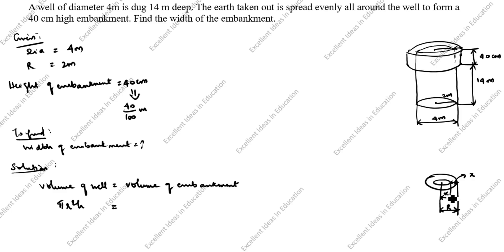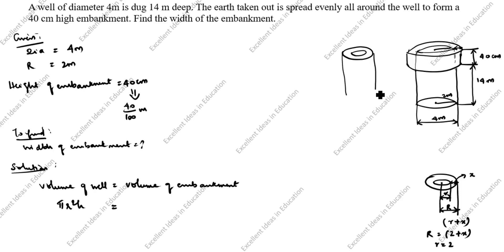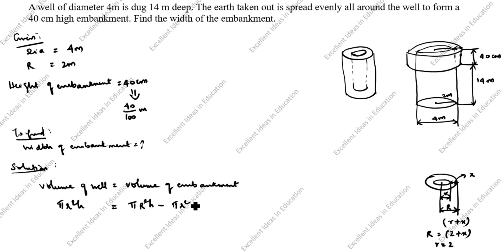We know small r value is 2 meter. What is the big R value? This is r, and this is x. We add them: R equals r plus x, so big R equals 2 plus x, and small r equals 2. For the embankment, the volume is the outside cylinder minus the inside cylinder. This is outside minus inside.